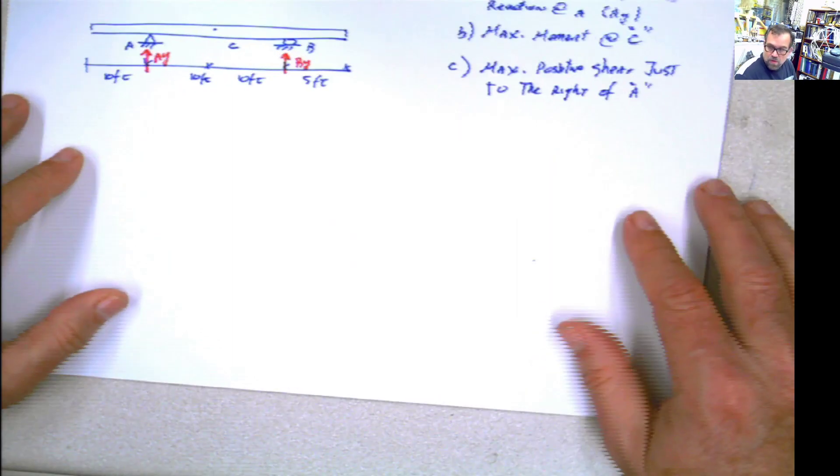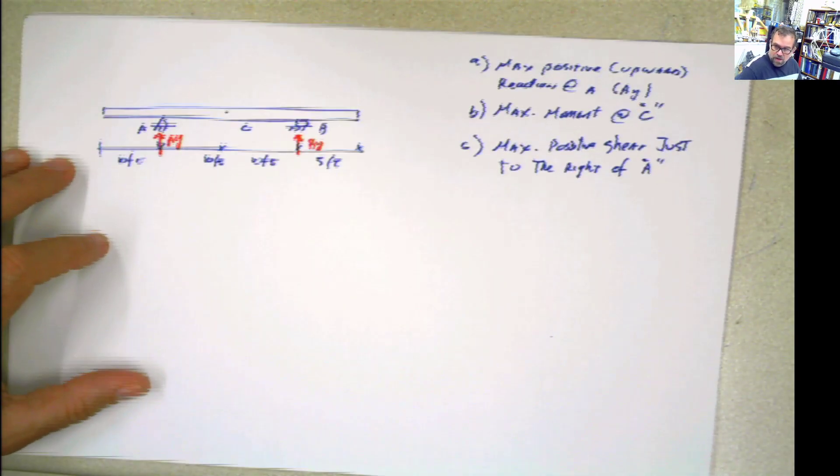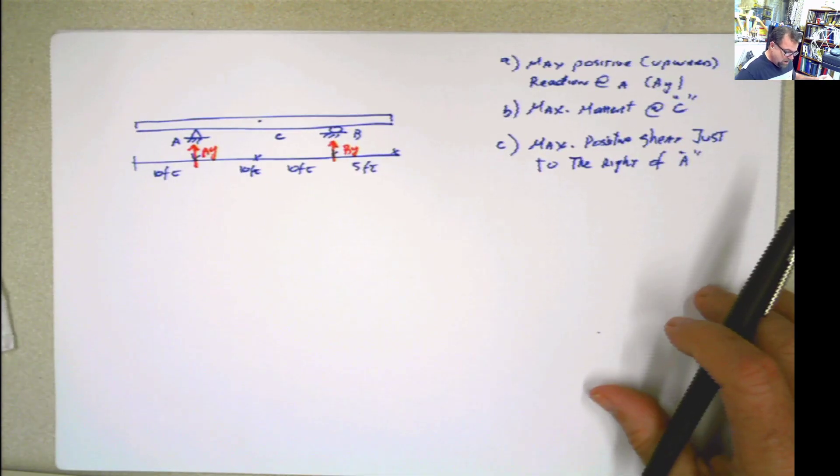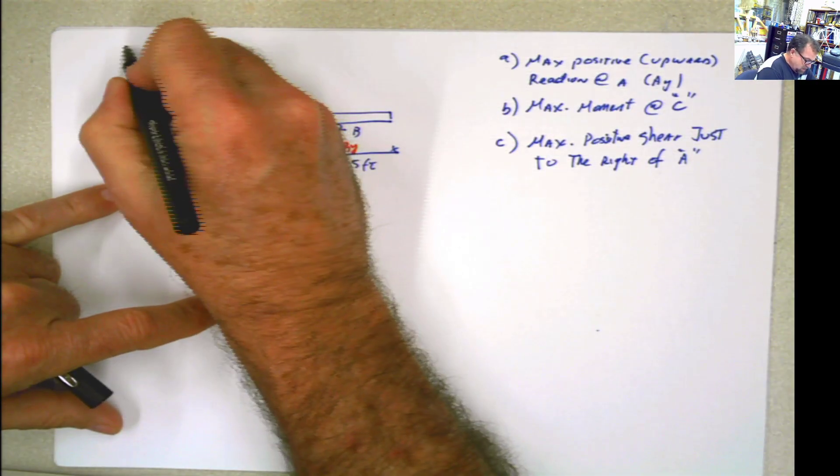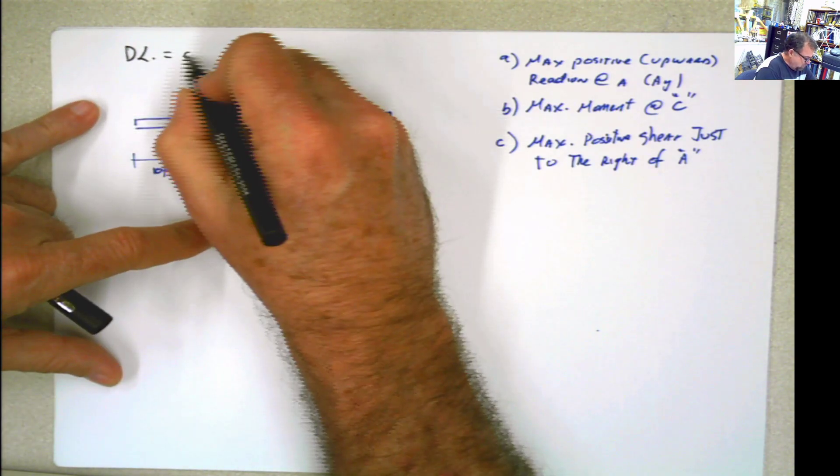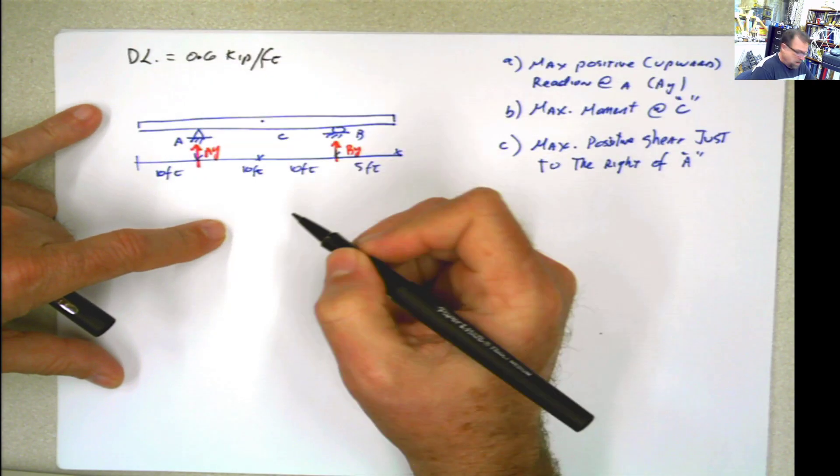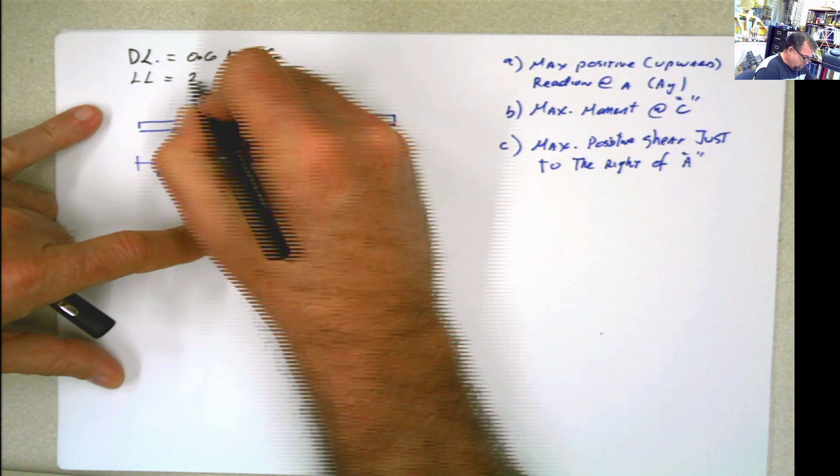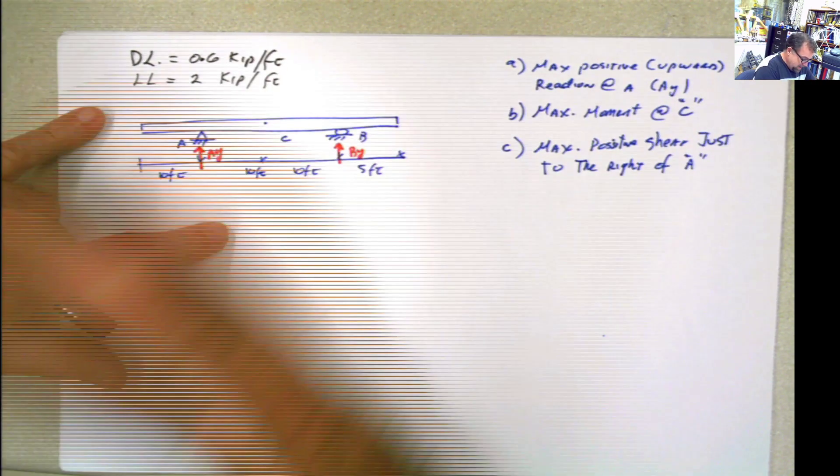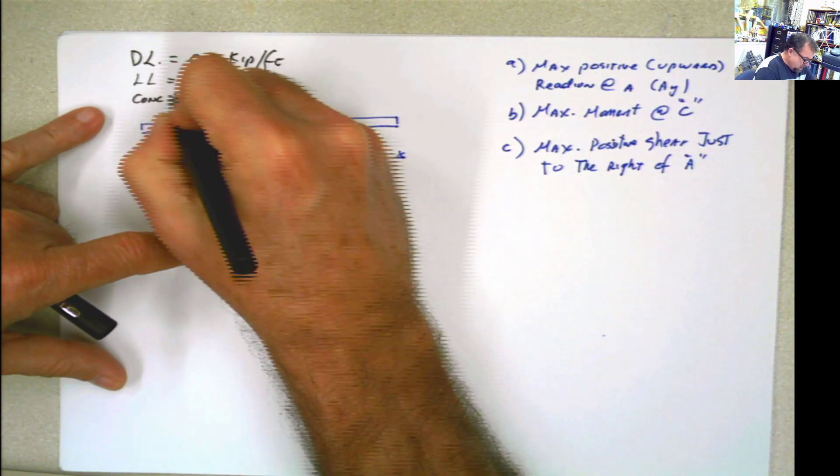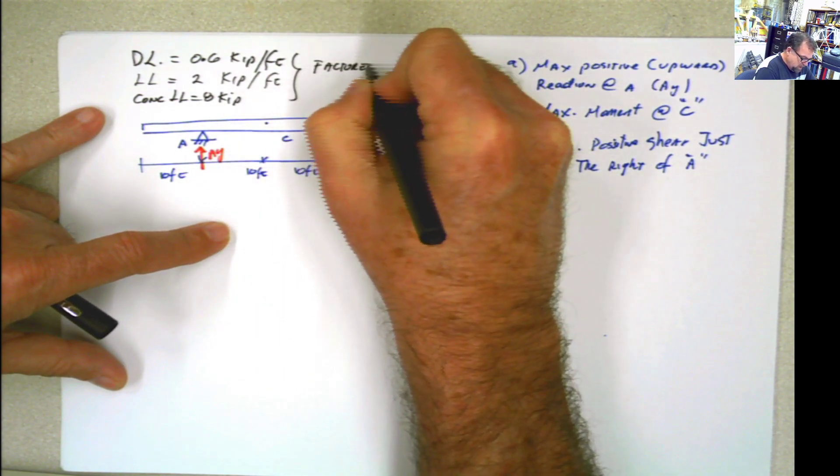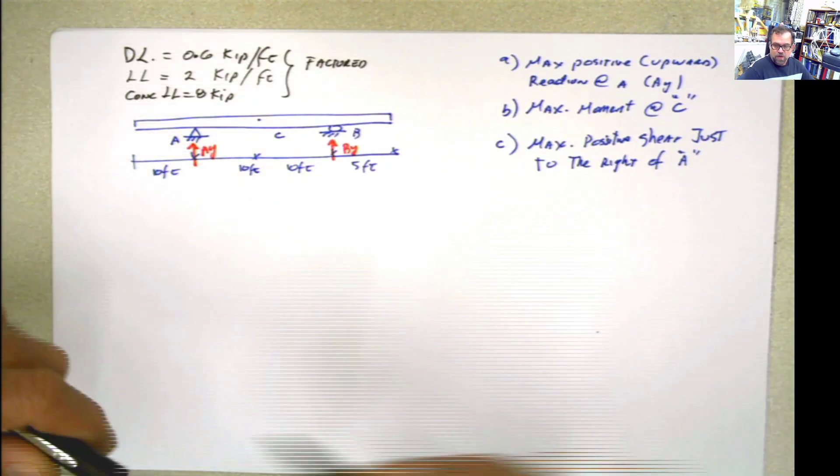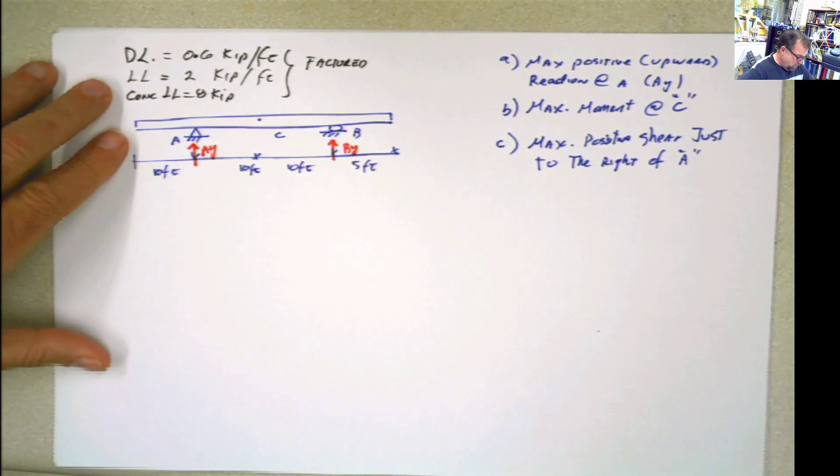Now we're going to repeat this problem. However, we're going to use the Muller-Breslau approach for that one. And it's not only now about drawing influence lines, but it is applying the influence lines. So I want to apply the influence lines for this beam, assuming that there is going to be a factored dead load of 0.6 kip per foot, and a factored live load of 2 kip per foot, and a factored concentrated live load of 8 kip. When I say factored, that means that already the coefficients for dead load and live load have been applied.